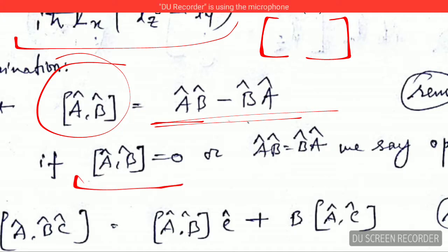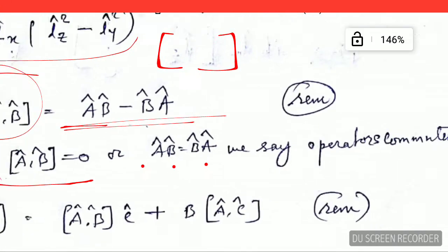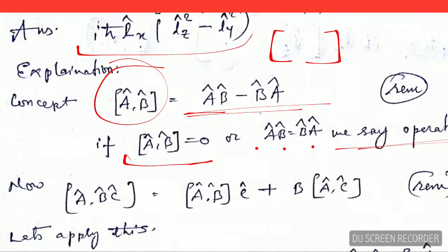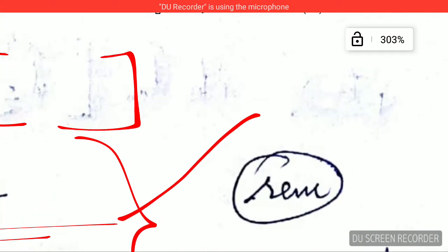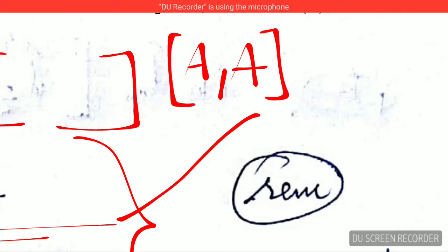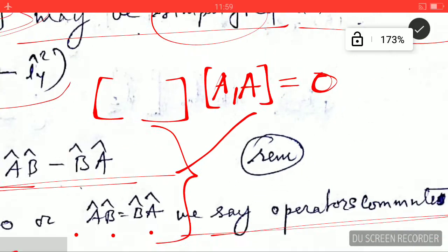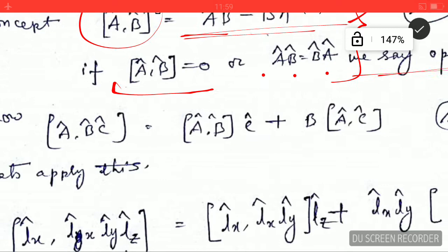If the commutator of A and B is equal to zero, or if AB equals BA, then we say that operators A and B commute — the operators are said to commute. Another important concept is that the commutator of A and A is always zero. If the same operator appears inside the commutator bracket, it will give you zero.